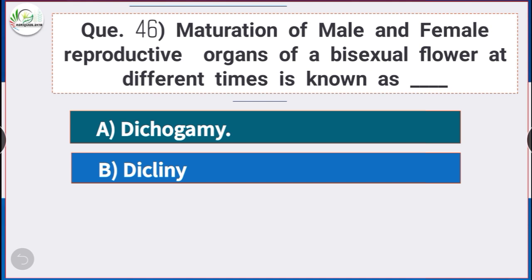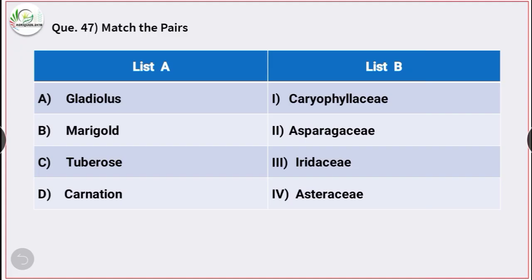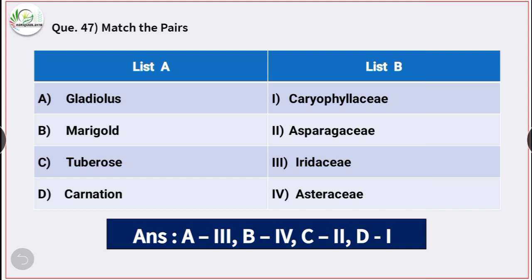Question number 46: Maturation of male and female reproductive organs of a bisexual flower at different times is known as dichogamy. Question number 47: Match the following. The correct matches are: family of gladiolus is Iridaceae.